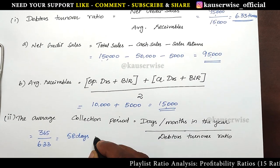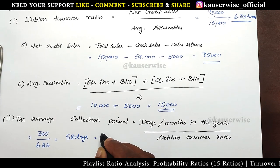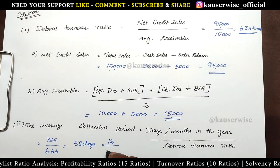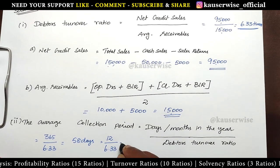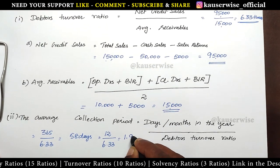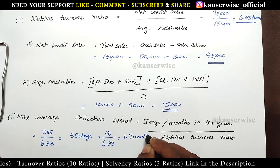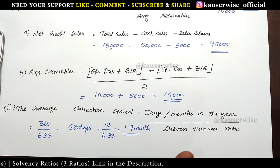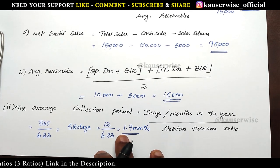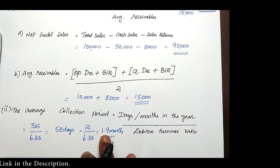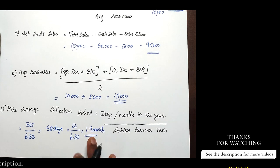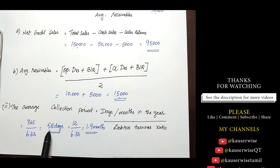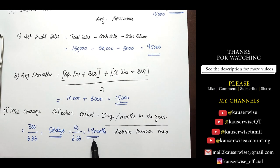Now let's see the calculation in months. How many months in a year? 12 months divided by the debtors turnover ratio 6.33 gives you 1.9 months — the actual figure is 1.89, rounded up to 1.9 months. So the average collection period is 58 days or 1.9 months.